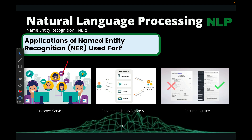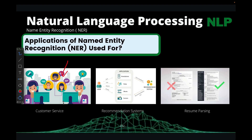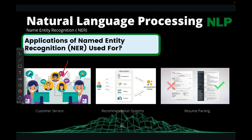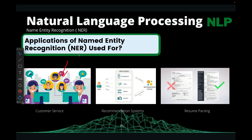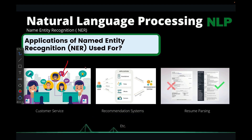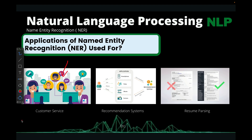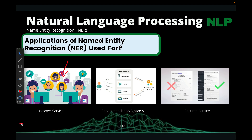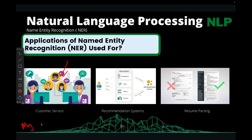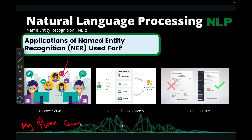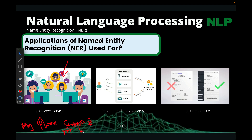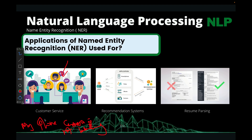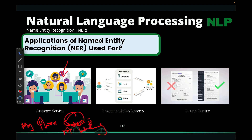Mostly in customer service, name entity recognition is mainly used. Customers will complain and create a ticket. In order for the department to know which category the complaint falls into, they use name entity recognition to identify the keywords in the complaint. For instance, if a customer writes 'my phone camera is not working,' we know the ticket should go to the department that works on the phone camera.